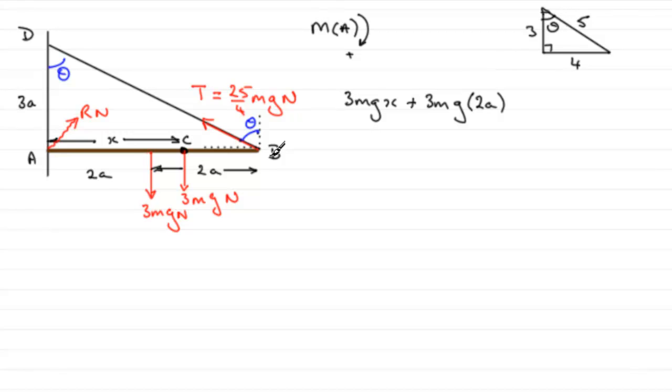When it comes to taking moments about A for the tension, we've got minus T cos θ because that component wants to turn the rod in an anti-clockwise sense about A. That's the force, and now we need the distance, which is 4a back to A, so multiply that by 4a. This is the resultant moment on the uniform rod AB, and because it's in equilibrium, it must equal zero.